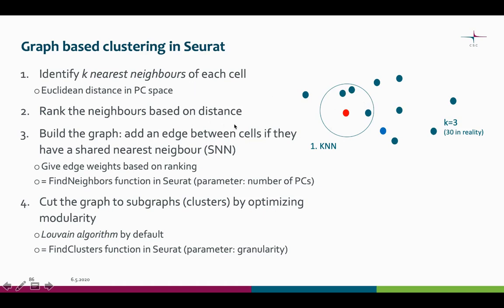Next, we rank the neighbors based on distance, and do the same step for all the different cells. Here we're looking at the blue cell, and we can see that these 3 cells are its nearest neighbors. Then we move on to building the graph using the shared nearest neighbor approach, which weighs the edges between cells based on their ranking. For example, we draw an edge when two cells share a neighbor.